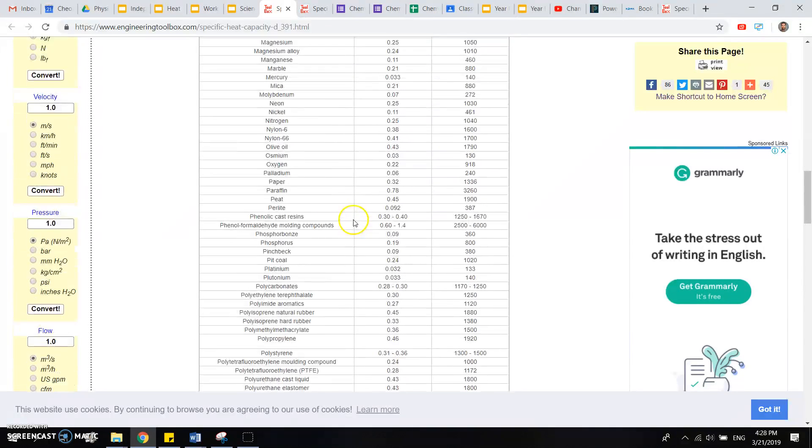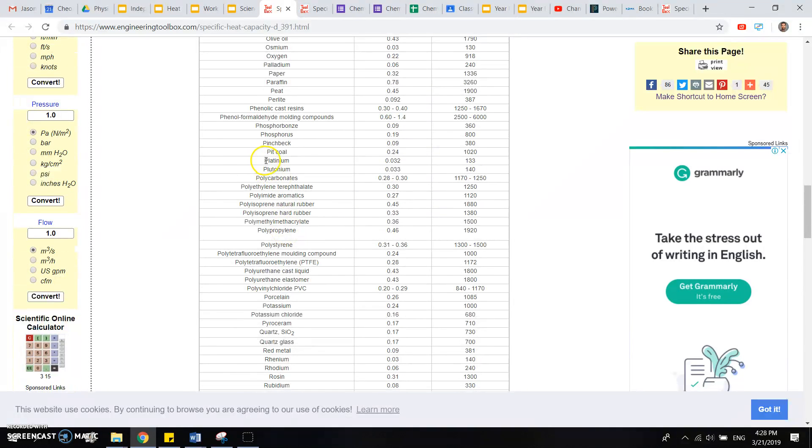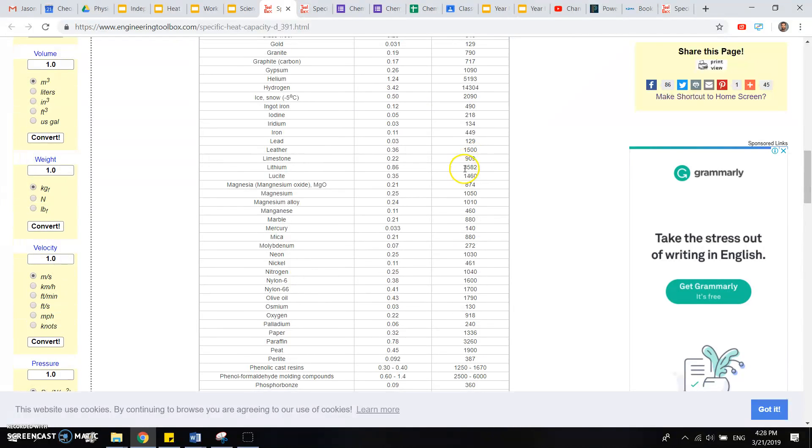Lithium, whoa. Platinum. That's a really good conductor, 133. Lithium, I can't even believe that. 3582, that's a terrible conductor.